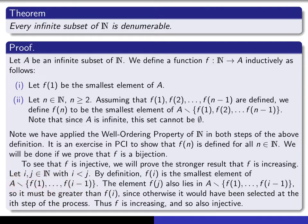f(j) must still be an element of that set because we haven't gotten to it yet. If f(j) were smaller than f(i), then we would have picked it at that stage. But f(i) is the smallest element of this set, and since f(j) is still in it, f(i) must be strictly smaller than f(j). So that proves that f is increasing, and in particular, it's also injective.